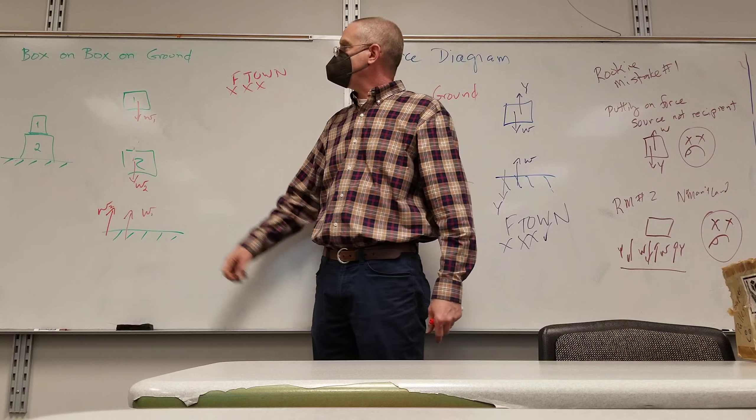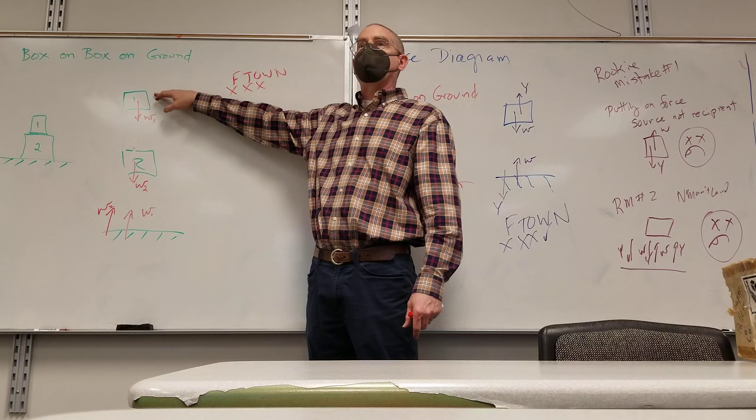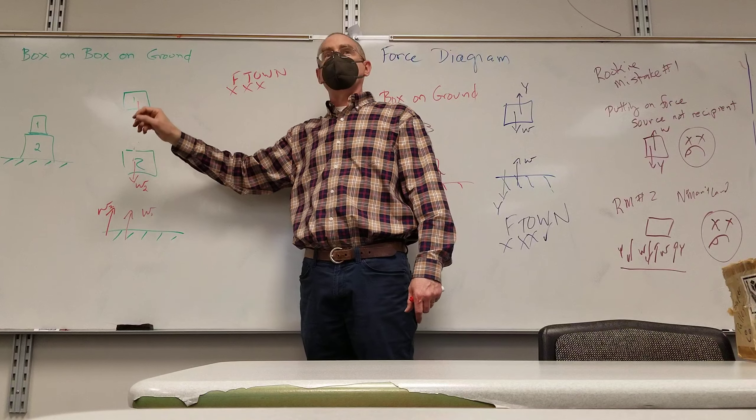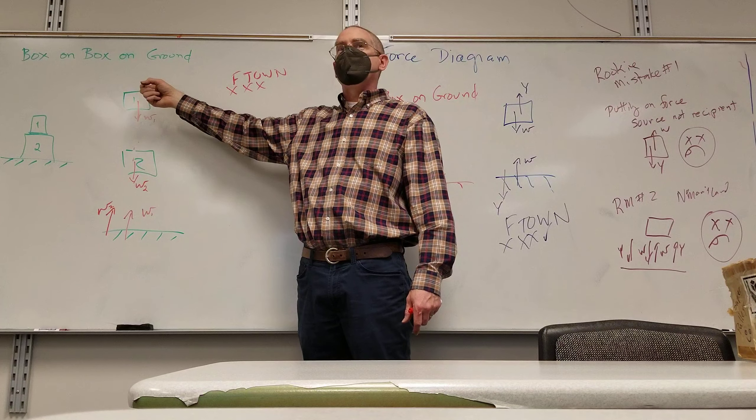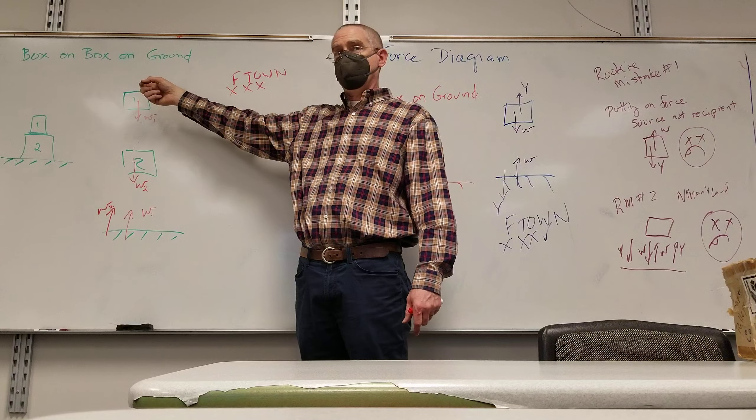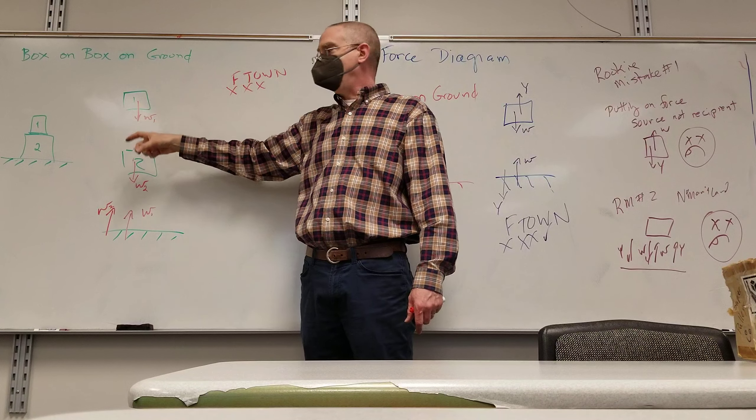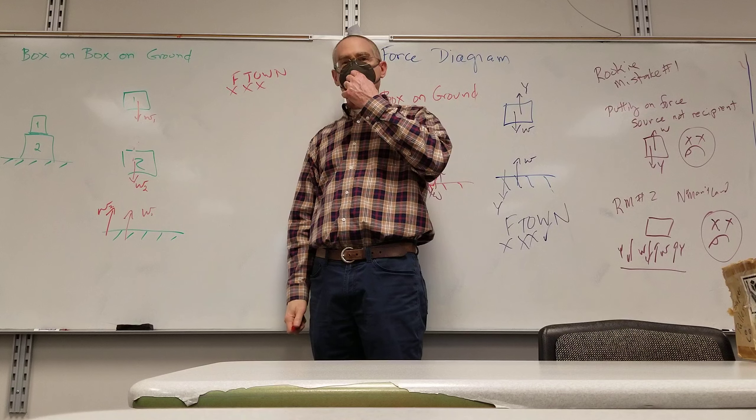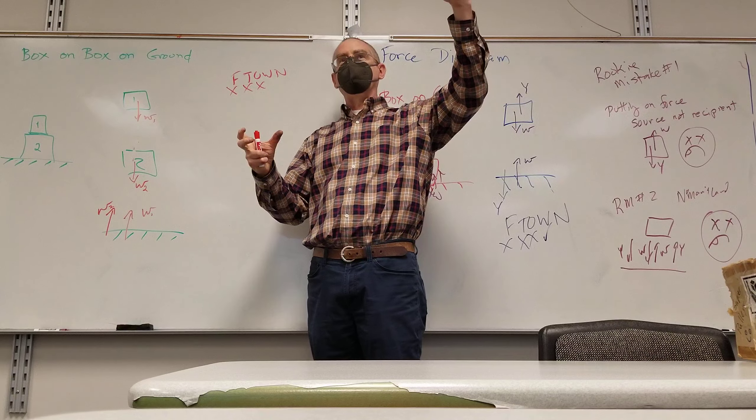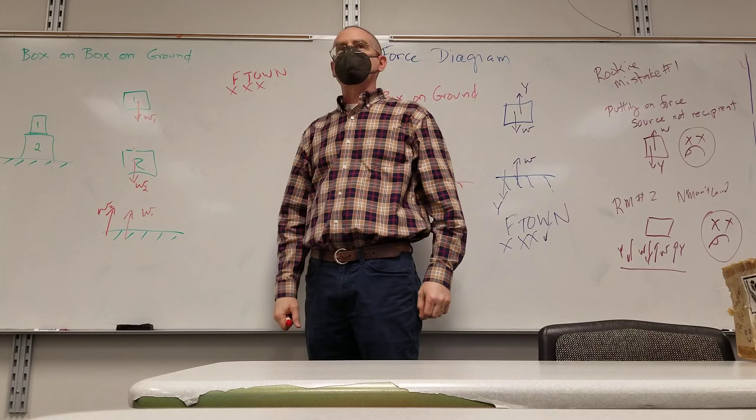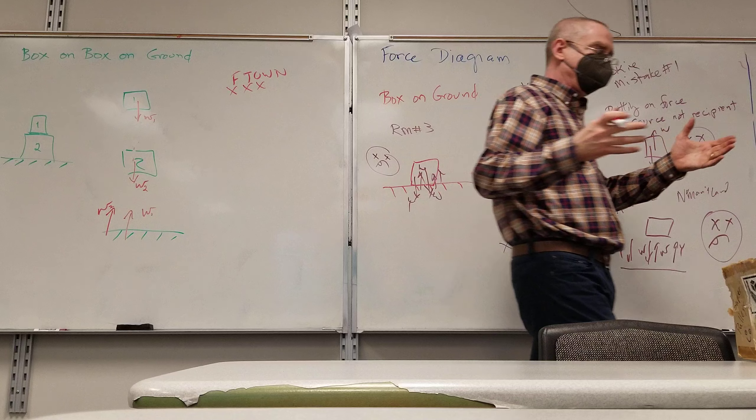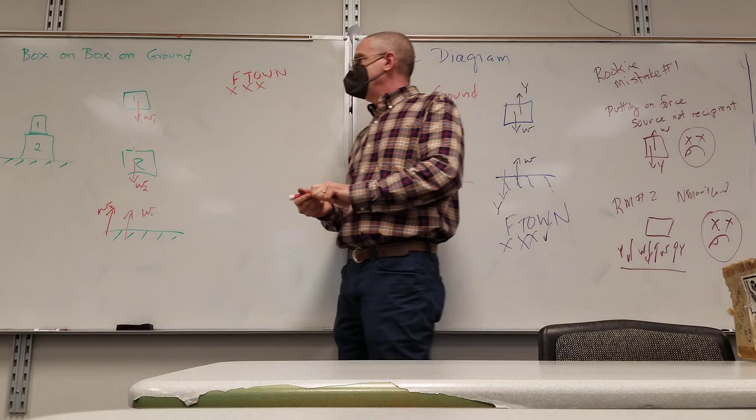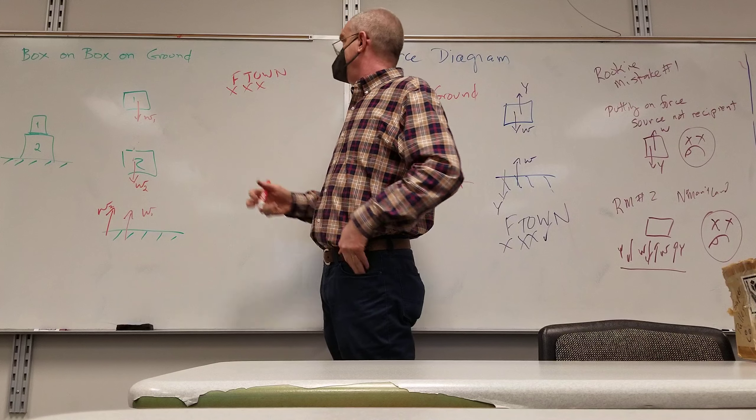If you do want to worry about the force between one and two, why not keep going? What about the gravitational force between the top part of box one and the bottom part of box one? We could split it into quarters or get down to the molecular level. This is the path of madness. Only bring in the generalized gravitational formula when you're talking about sun-planet or moon-planet relationships. Weight done.